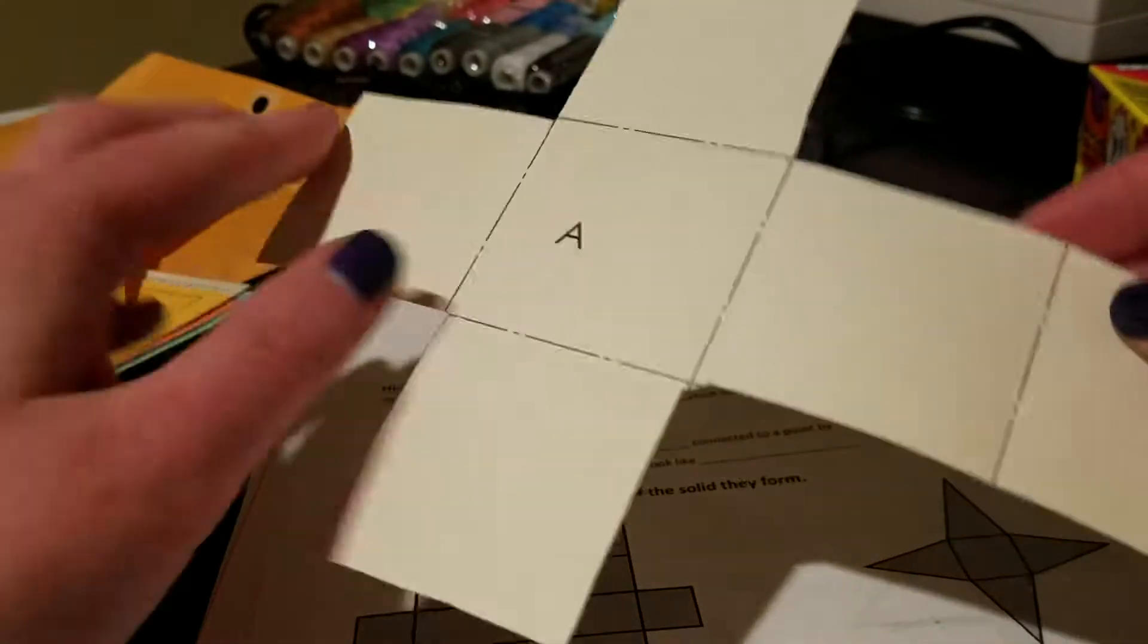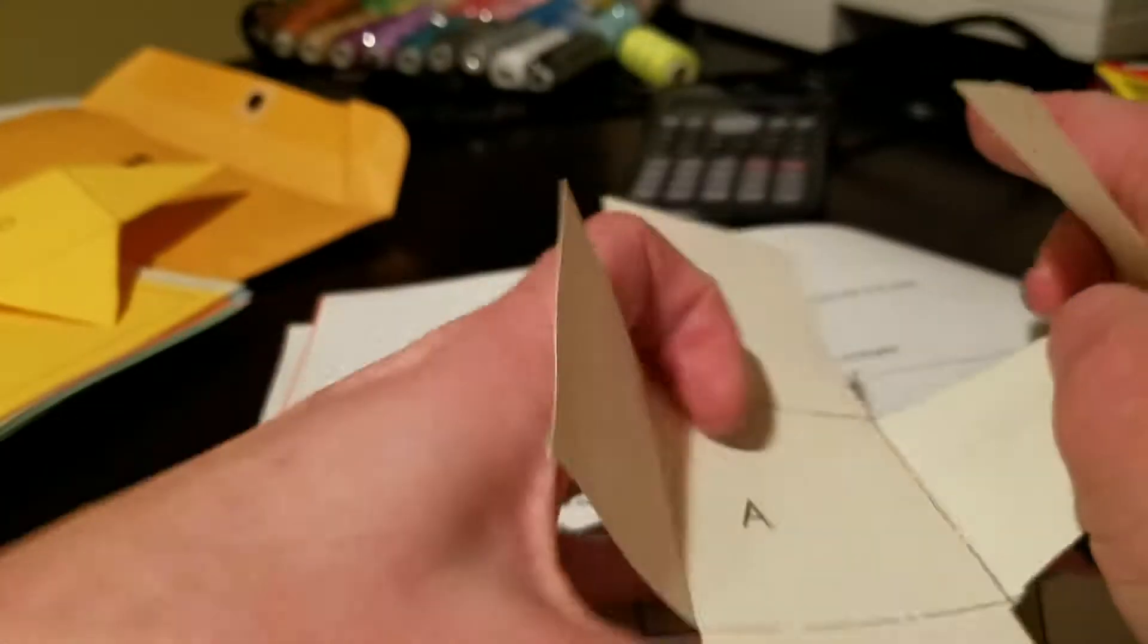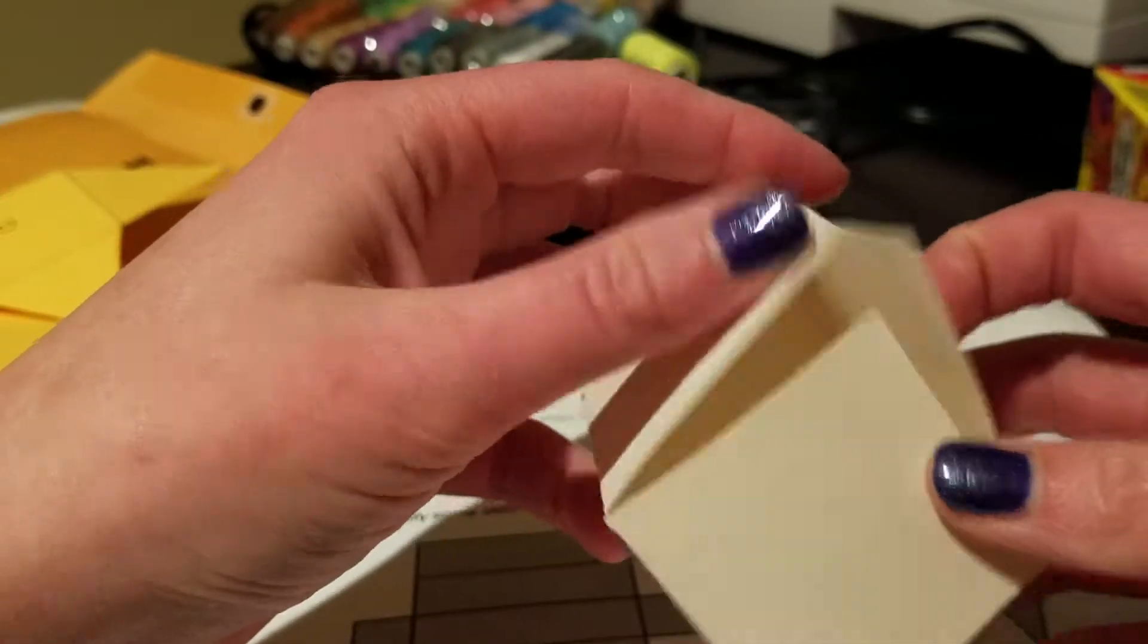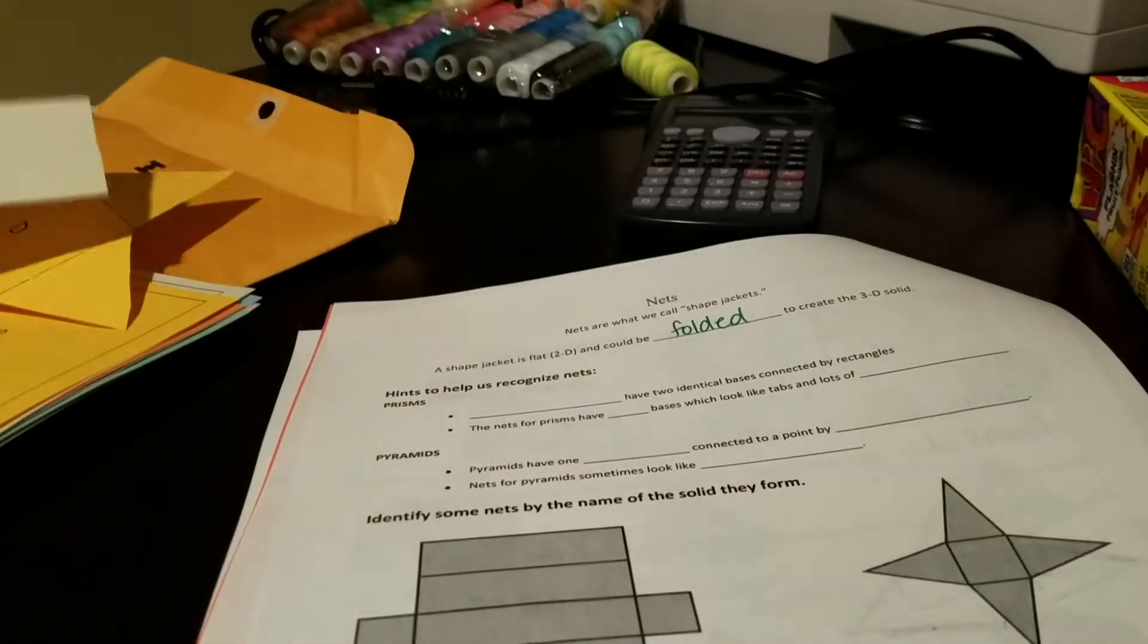This one, they're all the same. There's six of them. We actually fold it up. We create a cube, because it is made up of all squares. So six squares like that.